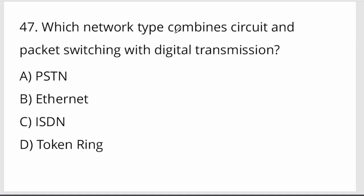Which network type combines circuit and packet switching with digital transmission? That is ISDN — Integrated Service Digital Network.